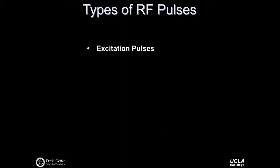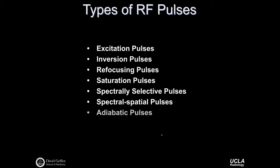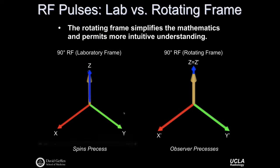There are many types of RF pulses: excitation pulses, inversion pulses, refocusing pulses, saturation pulses, spectrally selective pulses, spectrospatial pulses, adiabatic pulses, and more. This lecture series won't cover all possibilities, but excitation, inversion, and refocusing pulses are fundamental to MR. It's also important to recognize the distinction between the laboratory and the rotating frame. The rotating frame simplifies the mathematics and permits more intuitive understanding, which is why much of the mathematics of MR is performed in the rotating frame.